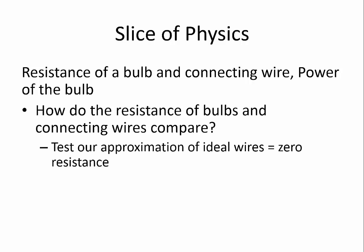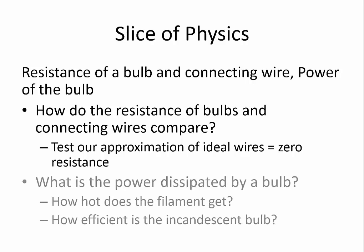We will first look at a comparison of resistances of the bulbs in the connecting wire with an aim to testing the approximation we mentioned in the previous video that the connecting wires can be thought of to have zero resistance. Then we'll look at the power dissipated by a typical incandescent bulb, mention how hot the filament gets and how efficient these bulbs are.